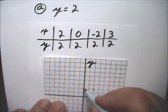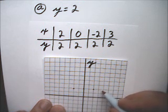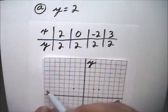Also, 0, 2 is there. Negative 2, 2 is there. And 3, 2 is there.